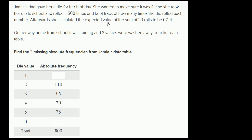The expected value of the sum of 20 rolls to be 67.4. On her way home from school, it was raining, and two values were washed away from her data table. Find the two missing absolute frequencies from Jamie's data table.